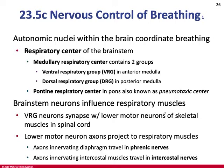Autonomic nuclei coordinate breathing in the medulla and pons. The medullary centers include the ventral respiratory group (front) and dorsal respiratory group (back). The pontine pneumotaxic center is in the pons. All three nuclei communicate and influence the rate and duration of contraction of respiratory muscles. The ventral respiratory group neurons talk to lower motor neurons in the spinal cord, which drive the diaphragm through the phrenic nerve and intercostals through intercostal nerves.